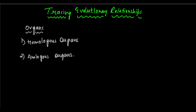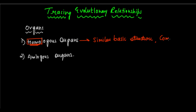Homologous organs — looking at the word 'homo', homo means similar. So homologous organs are those organs that have a similar basic structure and common origin. But in spite of all this, they have different functions.